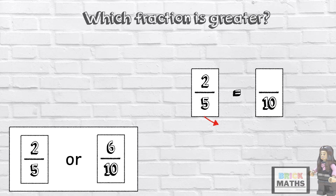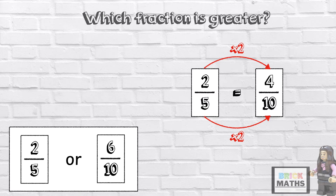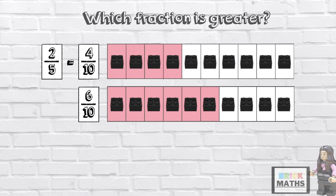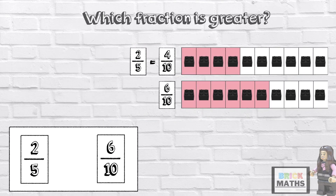How did you get on? Did you remember to multiply the denominator and the numerator by the same number? So 5 times 2 equals 10, and 2 times 2 equals 4. So 2 fifths is equivalent to 4 tenths. Did you manage to compare 4 tenths and 6 tenths? 4 tenths is less than 6 tenths, which means 2 fifths is less than 6 tenths.